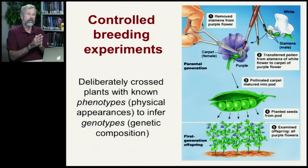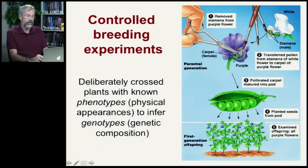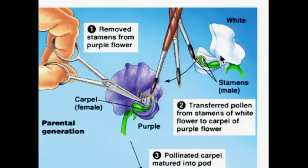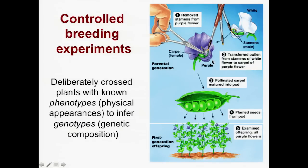To do this, he very carefully controlled which flower pollinated another. Here we have two different plants — one with white flowers and one with purple flowers. He would use a paintbrush to collect pollen from the white flower and brush it onto the purple flower. After pollination, he would snip it off so it couldn't mate with anything else. He then allowed the plant and seeds to mature, saved the seeds, planted them, and observed the offspring. In this case, pollen from the white flower fertilizing the purple plant produced offspring that all had purple flowers.